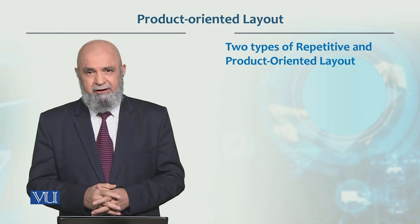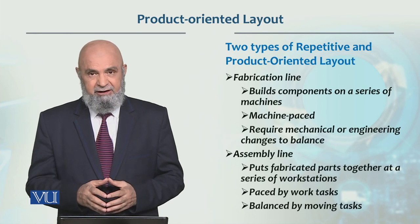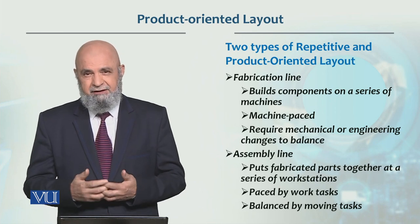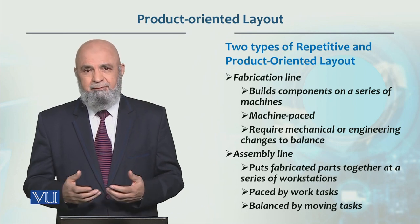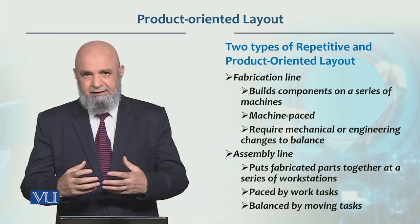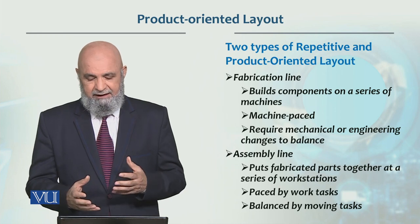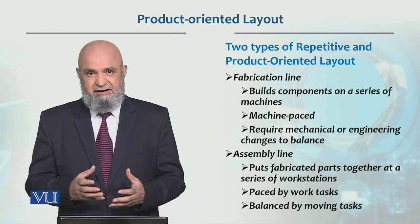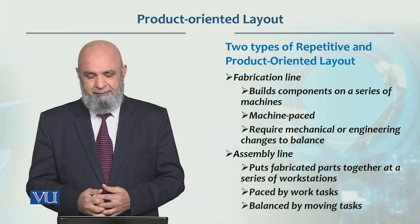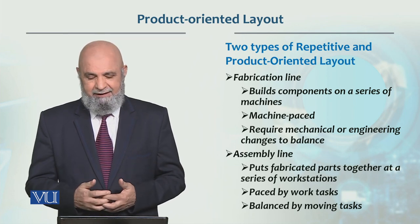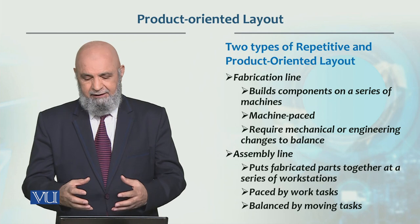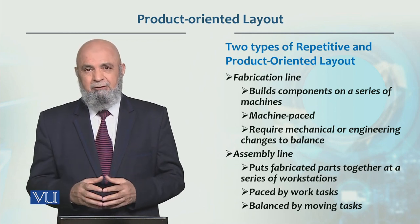There are two types of product-oriented layouts. One is the fabrication line, where components are produced on a series of machines — also called the production line or fabrication line, which is machine-based. The other type is the assembly line, where fabricated parts are combined and assembled into an end product on a series of workstations.